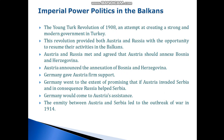Austria announced the annexation of Bosnia and Herzegovina. Germany gave Austria firm support, promising that if Austria invaded Serbia and Russia consequently helped Serbia, Germany would come to Austria's assistance. The enmity between Austria and Serbia led to the outbreak of war in 1914.